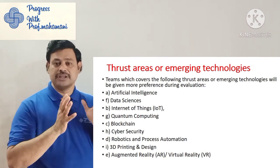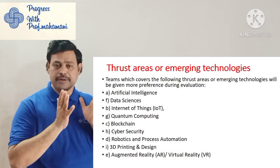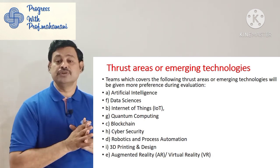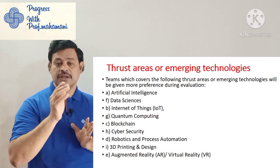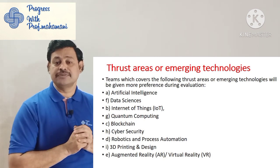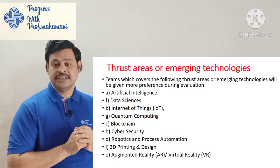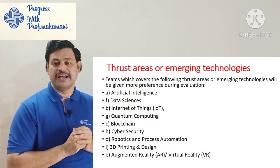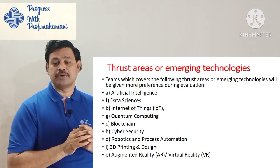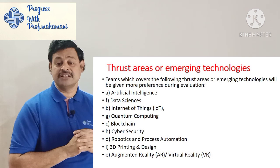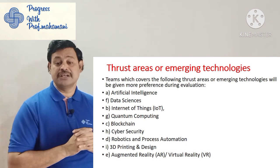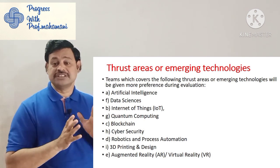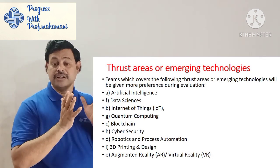The first priority area is emerging technologies. If you are planning your project in this area, you have more opportunity to get the award. The areas include: Artificial Intelligence, Data Science, Internet of Things (IoT), Quantum Computing, Blockchain, Cyber Security, Robotics and Process Optimization, 3D Printing and Design, and Augmented Reality and Virtual Reality.